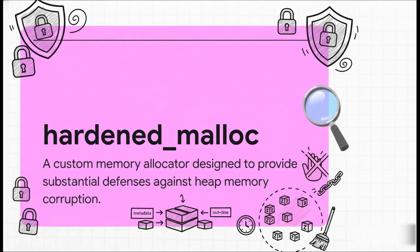At the heart of this hardening is a component called hardened_malloc, GrapheneOS's custom memory allocator. This thing is really a master class in defensive programming. It's designed specifically to make entire classes of memory corruption bugs unexploitable. Metadata is stored out of line to thwart heap overflows. It can deterministically detect invalid free calls. And its use of zero-on-free and randomized quarantines provides powerful mitigation against dangerous use-after-free vulnerabilities.